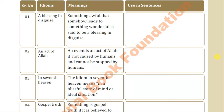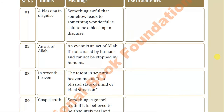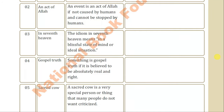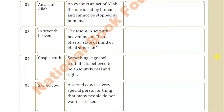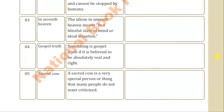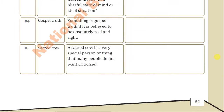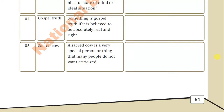'An act of Allah' — an event is an act of Allah if not caused by humans and cannot be stopped by humans. For example: many people died due to earthquake because it was an act of Allah. 'In seventh heaven' — means in a blissful state of mind or ideal situation. For example: she is in seventh heaven as she has achieved all her goals. 'Gospel truth' — something believed to be absolutely real and right. For example: it is a gospel truth that success cannot come without hard work. 'Sacred cow' — a very special person or thing that many people do not want to criticize. For example: nobody is a sacred cow in Islamic society.